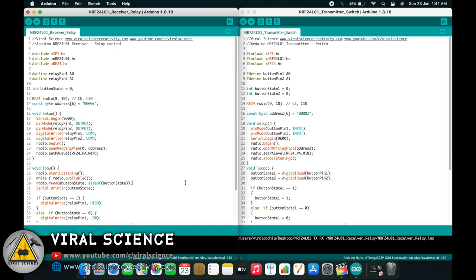On the left side, you can see the code for the receiver part, and on the right side, you will see the code for the transmitter part. We'll upload code one by one to both of the Arduinos.